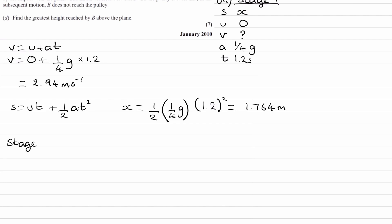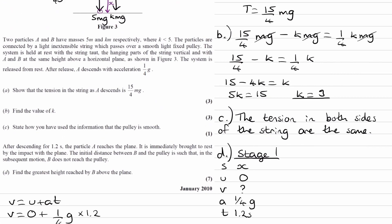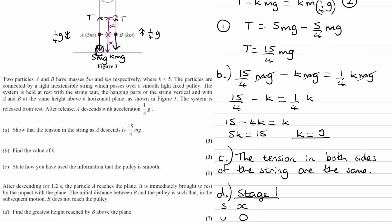So stage two is after A has hit the ground. And then B has a velocity. The velocity of B, the initial velocity of B for this stage, will be the final velocity of A in stage one. Whatever speed that A is moving at when it hits the ground, will be the speed of B at that same instant. But the velocity of B will just be upwards, the velocity of A will be downwards.